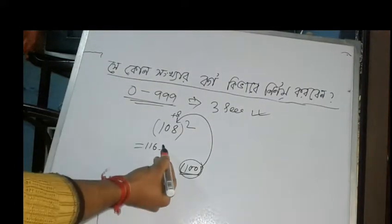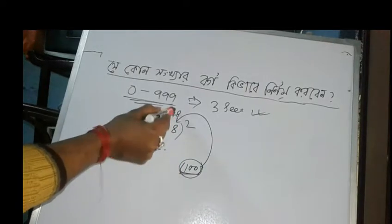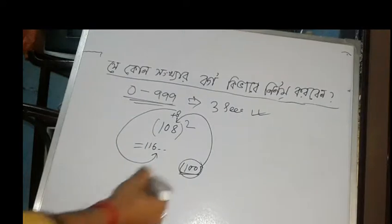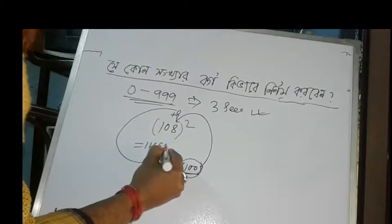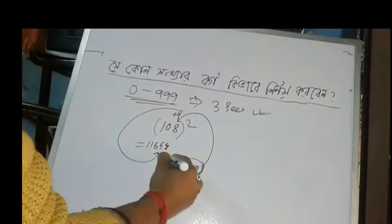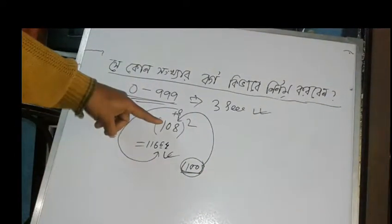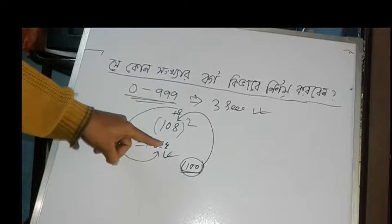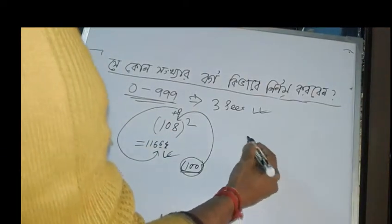The last two digits: 8 squared is 64. So 108 squared equals 116 and 64, giving us 11664.